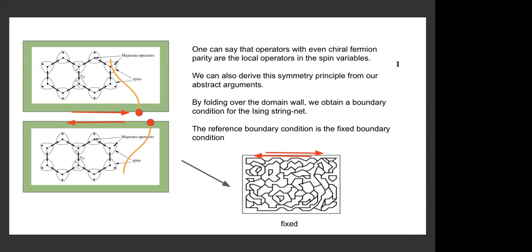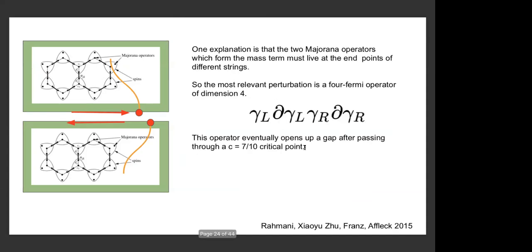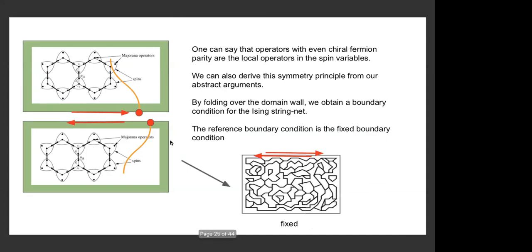One way to encode these locality rules is to say that we need to preserve the chiral fermion parity — we need the same number of gamma-lefts as gamma-rights, as we have in this four-Fermi operator. The gamma-rights come from one side and pair up with their strings, and the gamma-lefts from the other side also pair up with their strings.